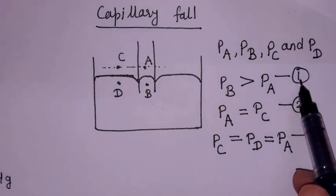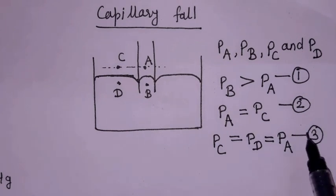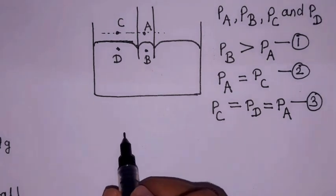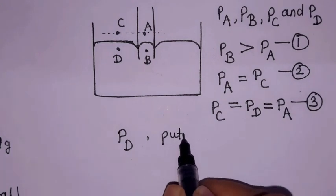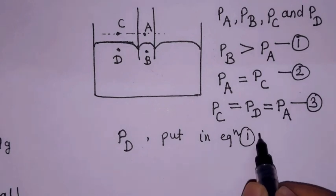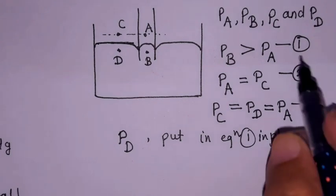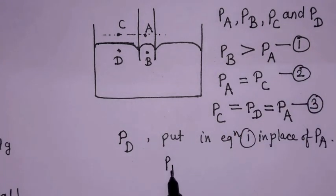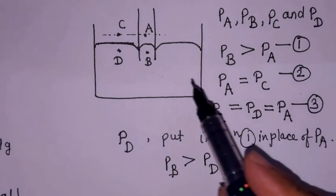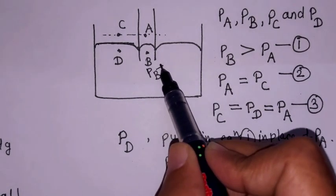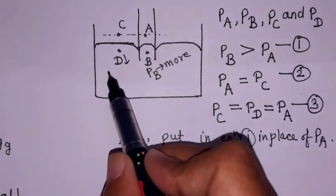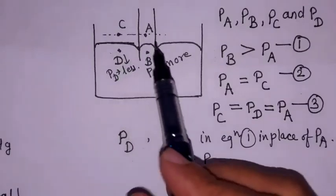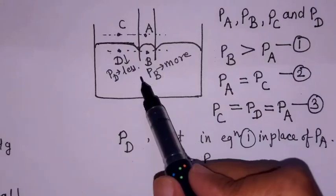From these three equations, putting PD in place of PA in equation number 1, equation 1 is modified to: PB is greater than PD. This means the pressure at point B is more and the pressure at point D is less, even though B and D are at the same horizontal level.